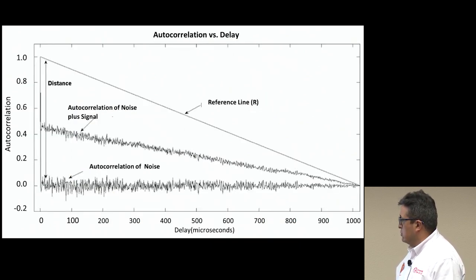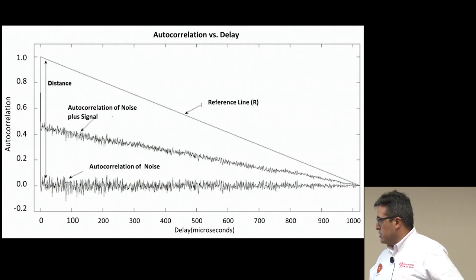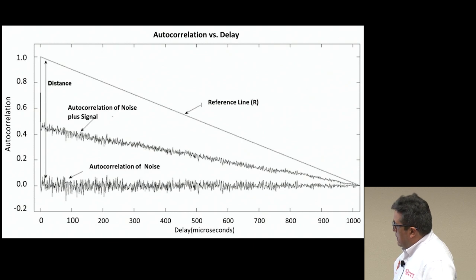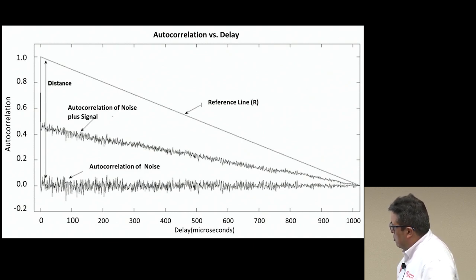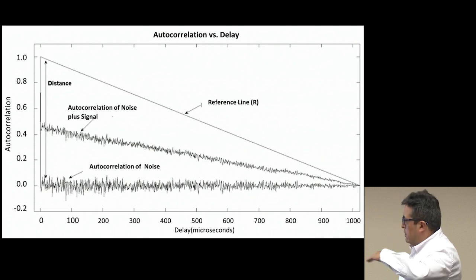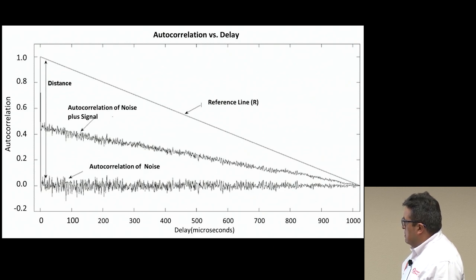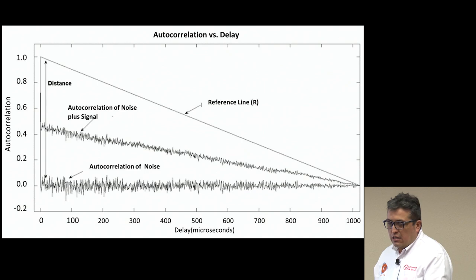The first method, which I have called the Euclidean distance method, measures the distance between the autocorrelation and the reference line. This reference line is used as the limit — the autocorrelation cannot go further than that. So, you calculate the Euclidean distance and, based on the value, decide if there is a signal or not.